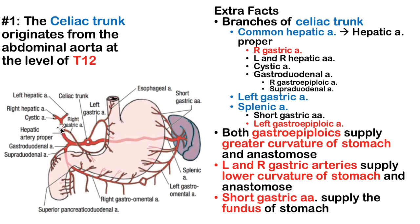Eventually the hepatic artery proper will go on to form your cystic artery, your gallbladder, and then your right and left hepatic arteries. The common hepatic artery branches into the hepatic artery proper and the gastroduodenal artery. The right gastric artery comes off the hepatic artery proper to supply the right lesser curvature, and the left lesser curvature comes from the left gastric artery, the second branch from the celiac trunk.